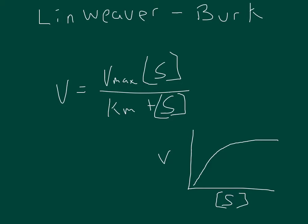Typically, the graph of the velocity of enzyme activity versus the substrate concentration makes a curved logarithmic line, and that's based on the nature of the equation V equals Vmax times the substrate concentration over Km plus the substrate concentration. What we're going to do is turn that into a straight line, so it's a little bit easier to interpret.